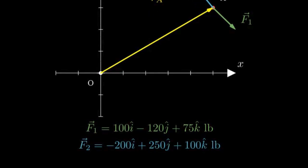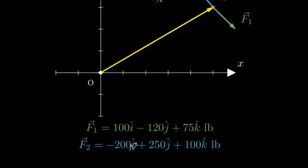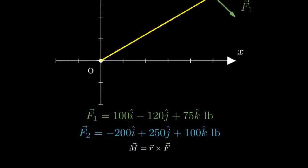To find the resultant moment about point O, we need to calculate the cross product of the position vector r with each force, using the formula m equals r cross F.